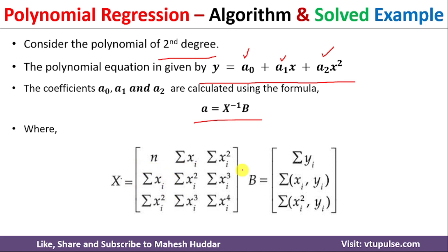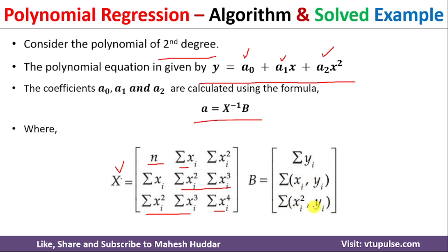The first row of matrix X is: n (number of inputs), Σxi, Σxi². The second row is: Σxi, Σxi², Σxi³. The third row starts with Σxi², then Σxi³, then Σxi⁴. For vector b, the first element is Σyi, the second is Σxi·yi, and the third is Σxi²·yi.